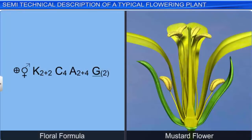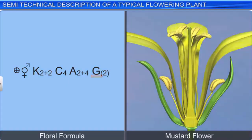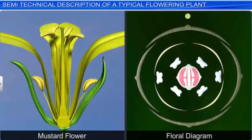The mustard flower is actinomorphic and bisexual. The calyx has 4 sepals arranged in 2 rows, and the corolla has 4 petals. There are 6 stamens arranged in 2 rows, and the gynoecium is bicarpellary and syncarpous with a superior ovary. The floral formula of a flower is usually accompanied by its floral diagram.